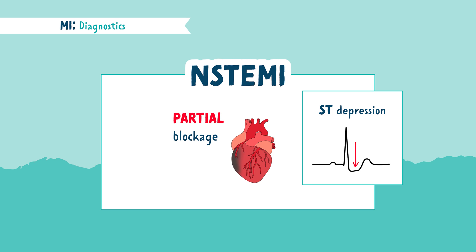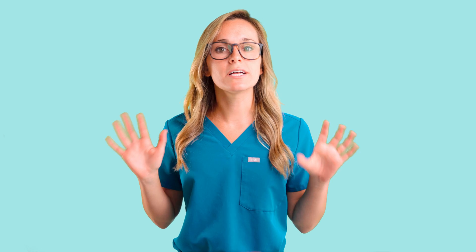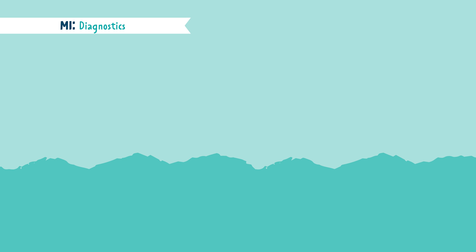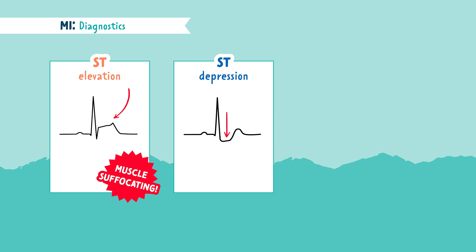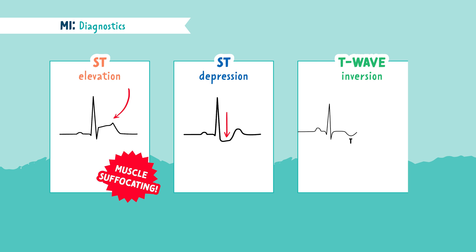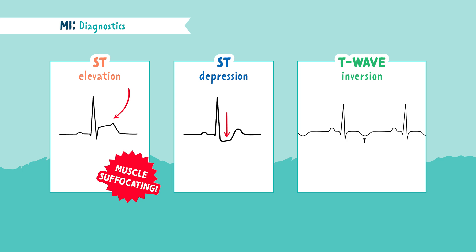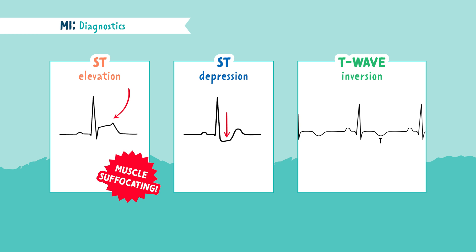Some other warning signs of an MI can be seen on an EKG. You may see an ST elevation, which means total blockage and the muscle is suffocating. You may also see ST depression and a T-wave inversion. These all indicate injury to the heart.